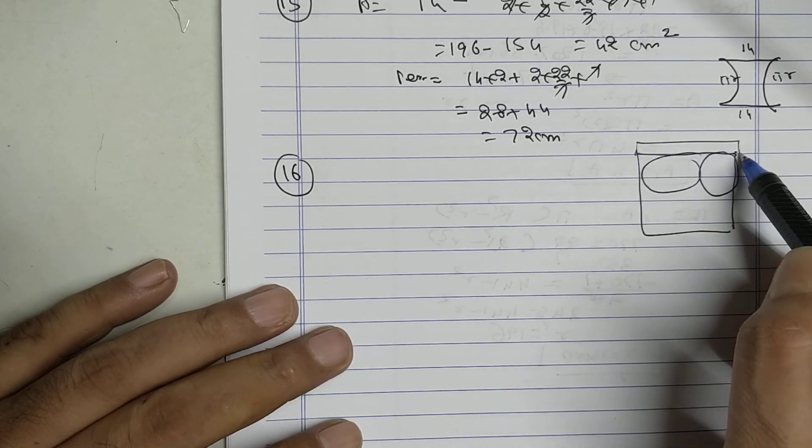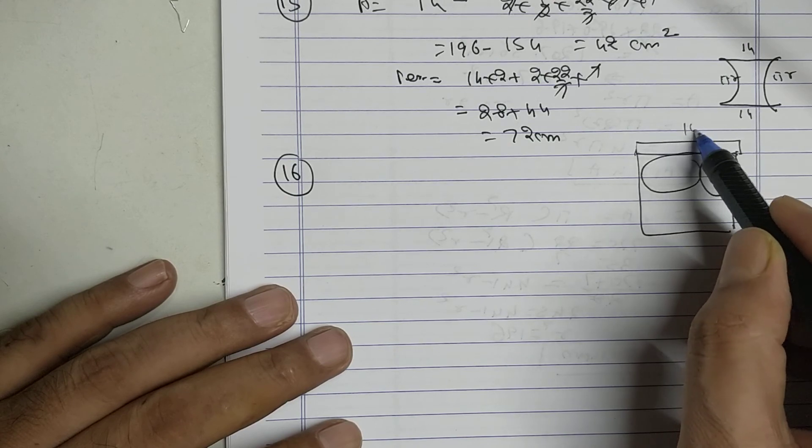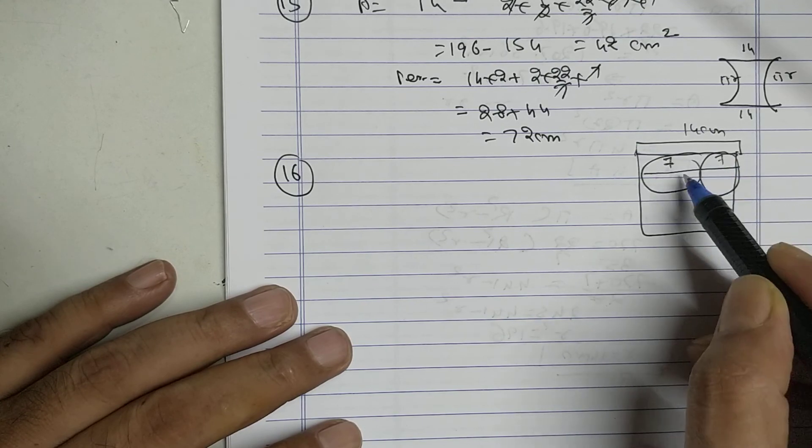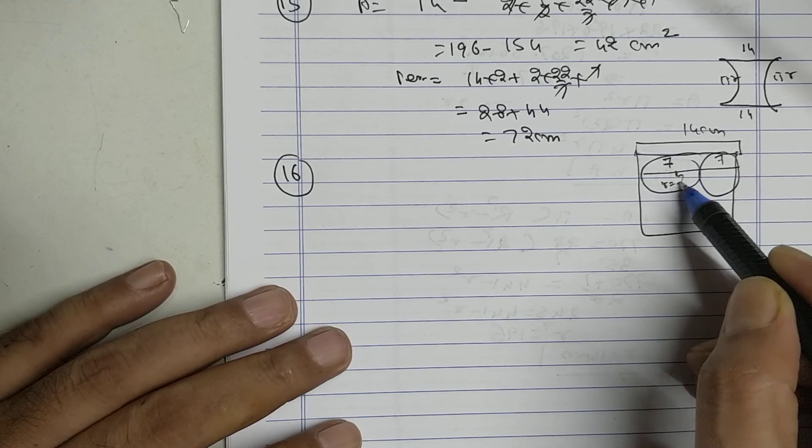From this point, this total is 14, this is 7, so my radius is 7 upon 2.